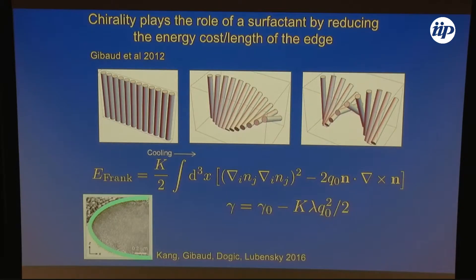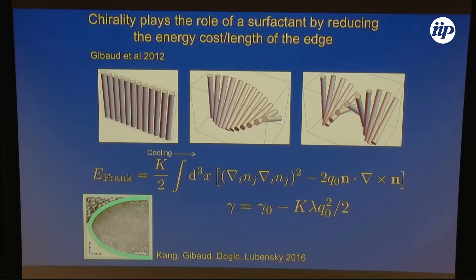Here's an example of this kind of thinking. When you cool this system — for example, if you take a lot of these rods and concentrate them, forget about the polymers, just the rods — at high temperatures above 60 degrees they form a nematic phase. When you cool it, they twist, and the pitch gets shorter and shorter the lower the temperature. So you can control the pitch that way.